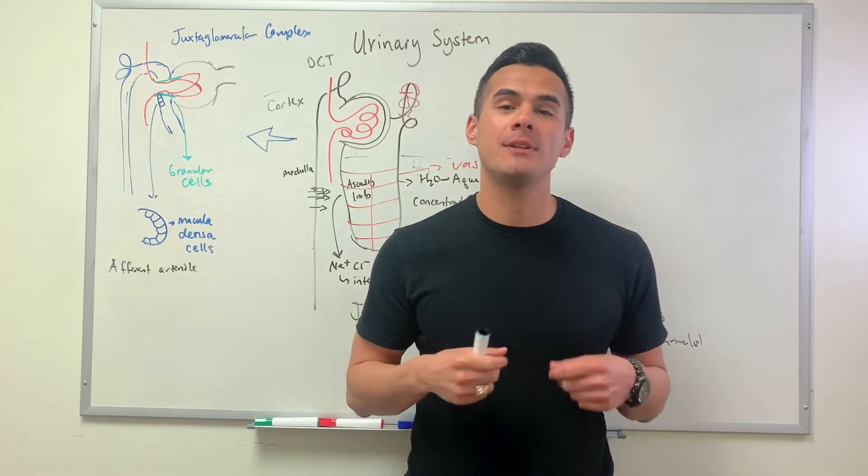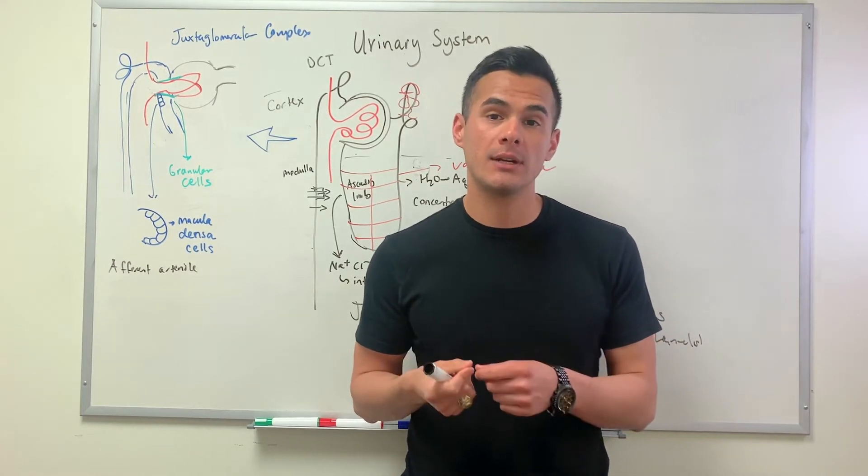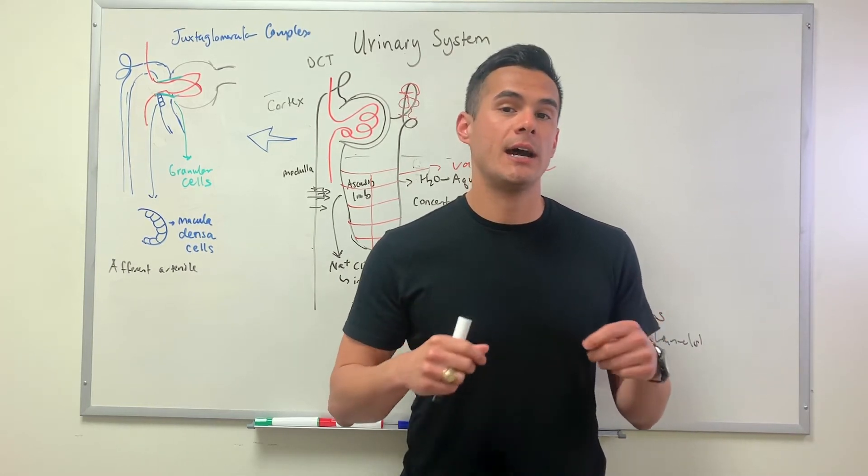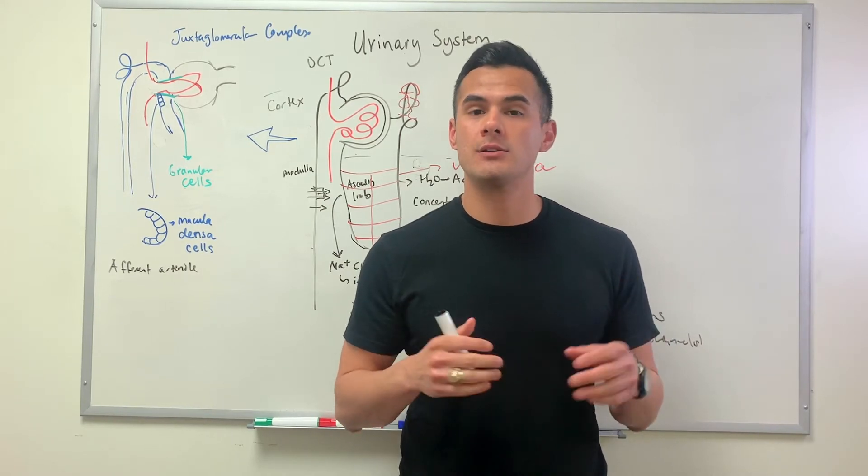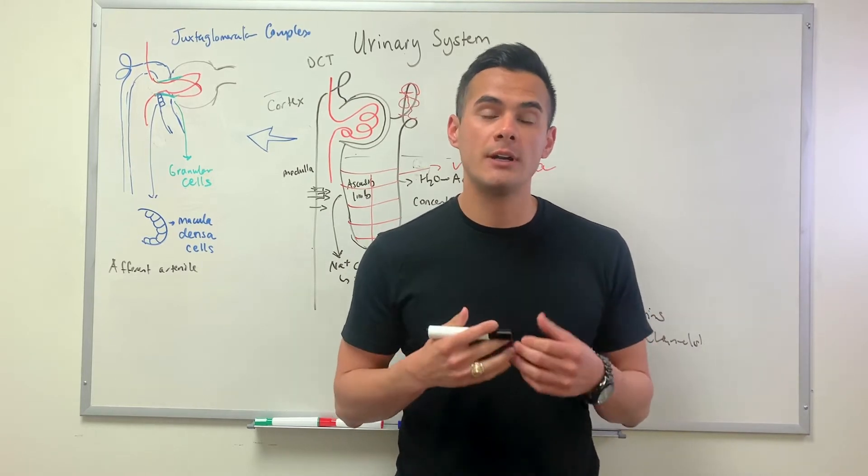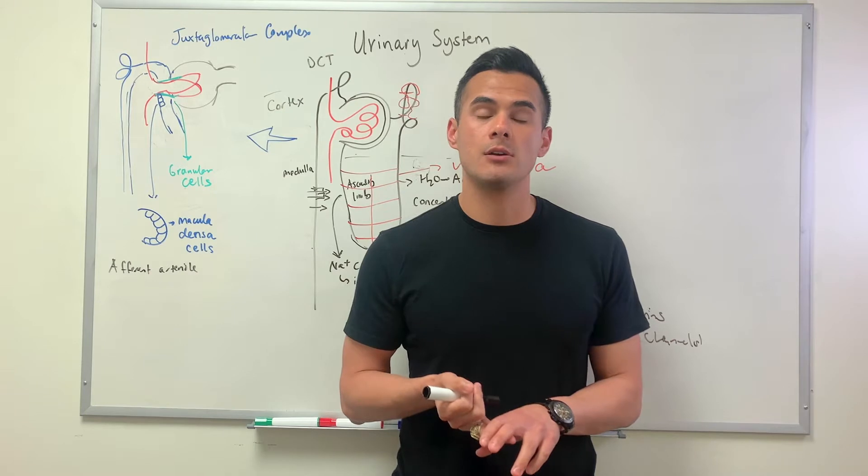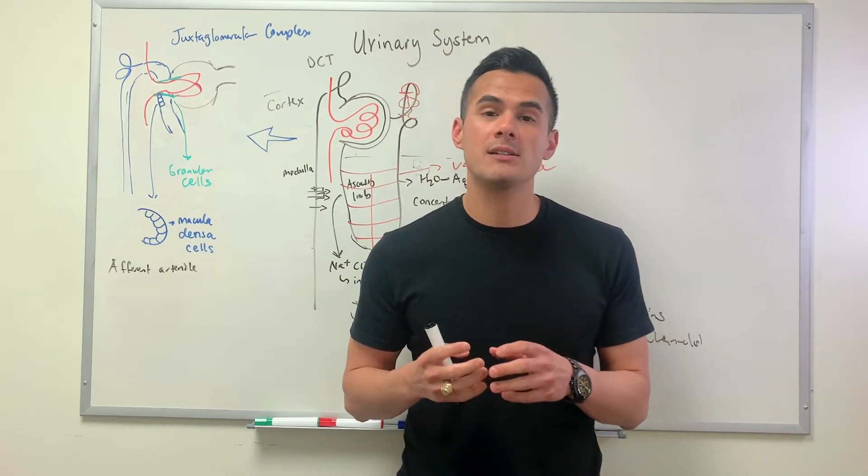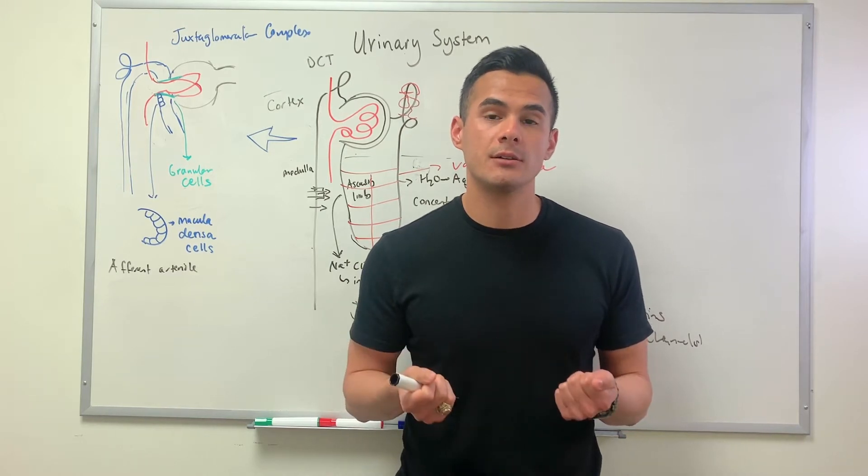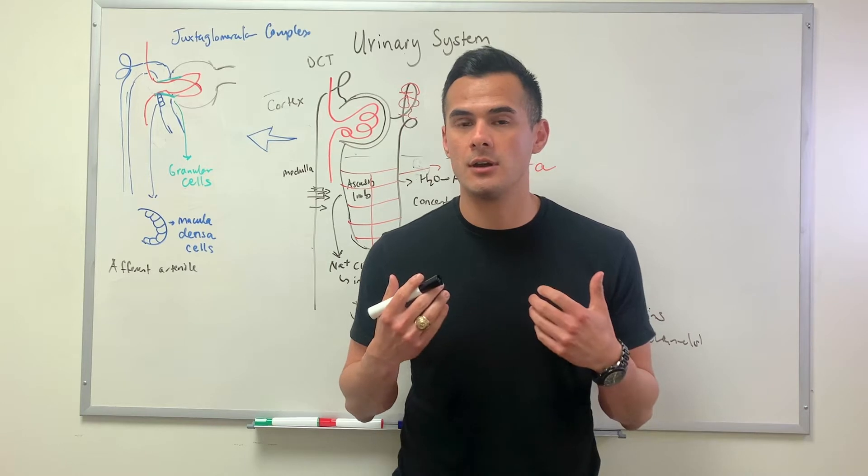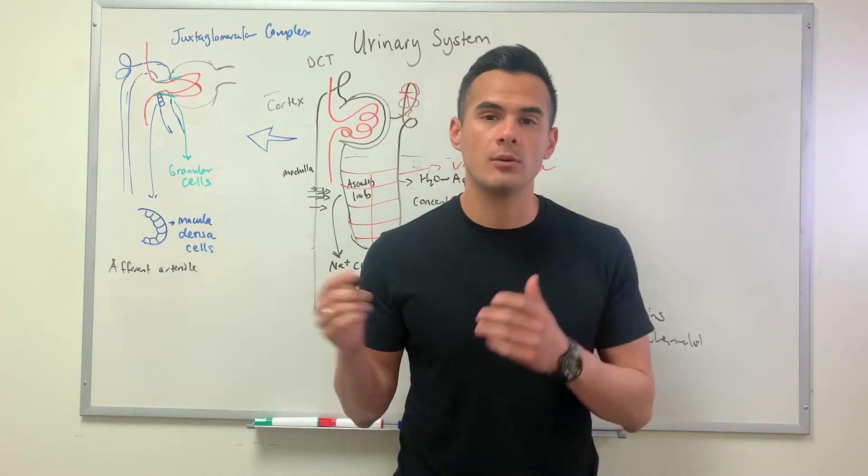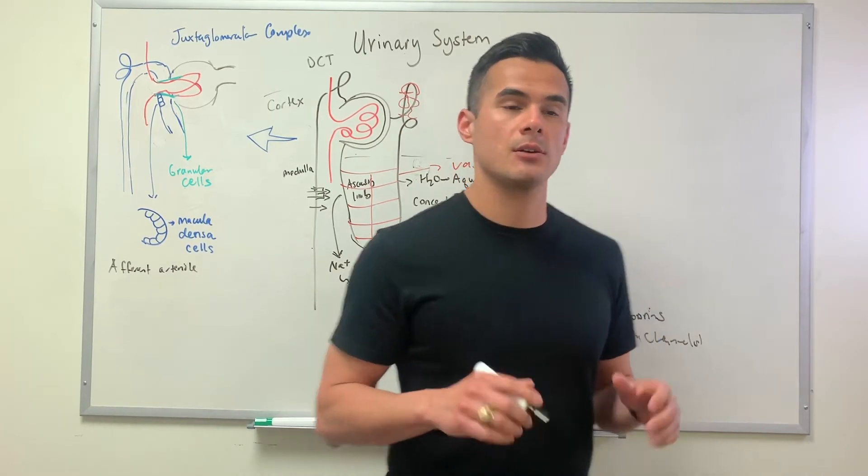In this lecture we need to talk about the juxtaglomerular complex. Earlier I mentioned in the event where we are dehydrated, we are losing water. When someone's working out a lot they lose water and they're also losing salt. This juxtaglomerular complex is going to help increase our blood pressure because as we lose all this water and salt, our blood pressure is going to decrease because there's less fluid traveling within the blood vessels.